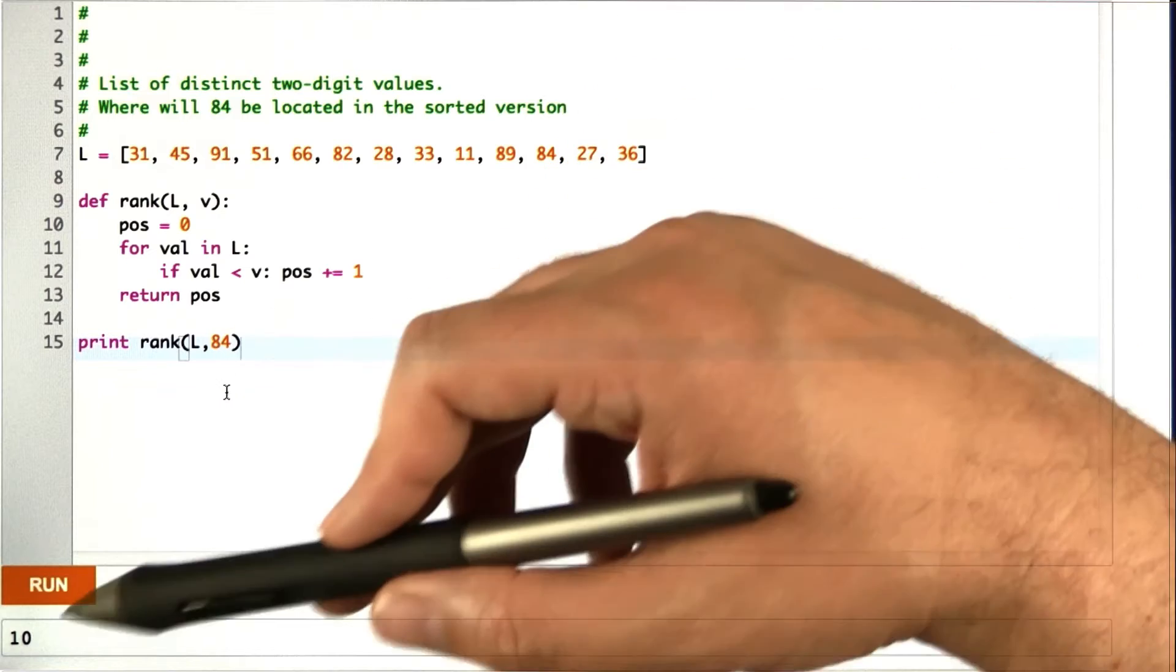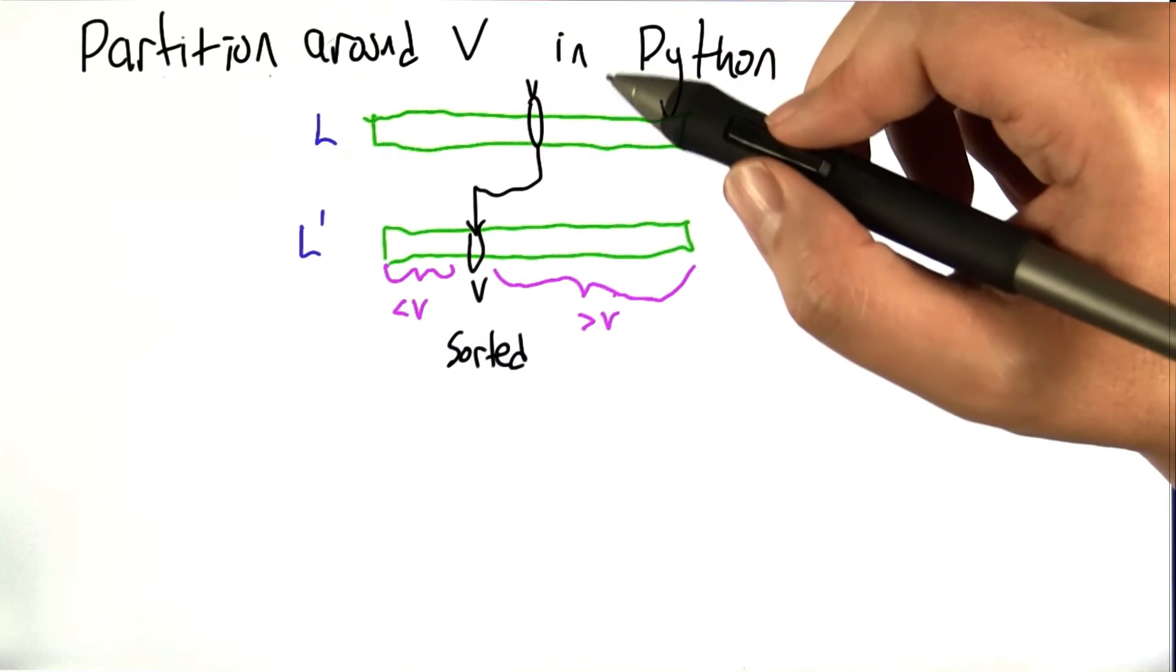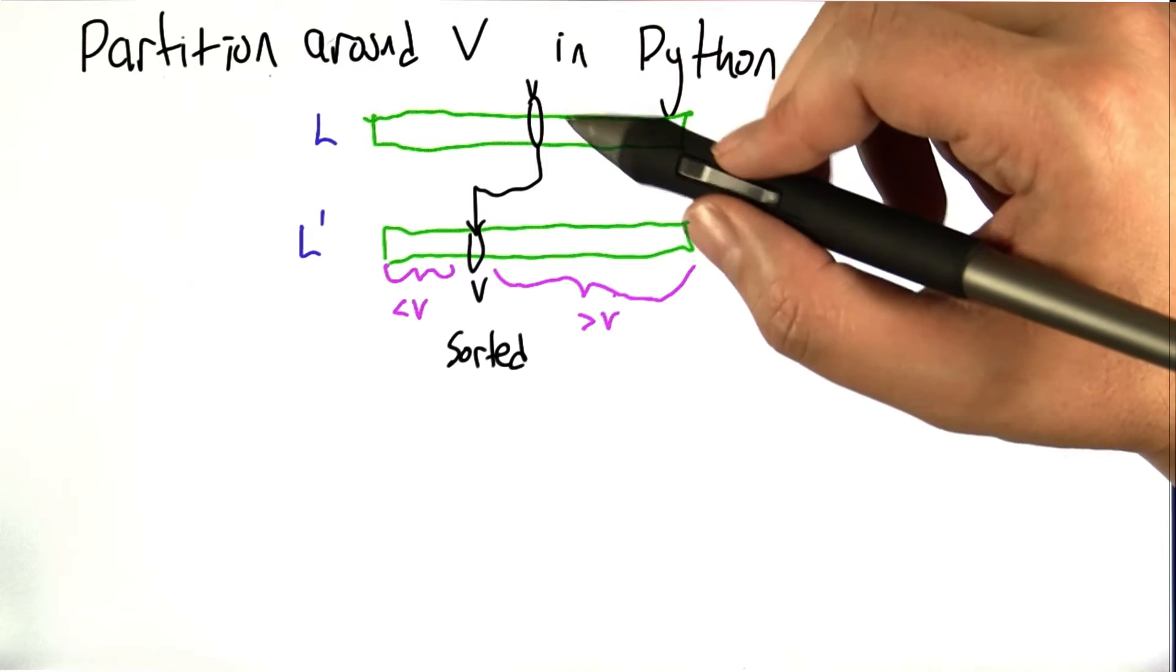So in this list, 84 will be in position 10. So we're going to use this idea now to do something a little more clever.